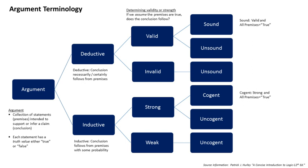Informal arguments, as studied in informal logic, are presented in ordinary language and are intended for everyday discourse. Conversely, formal arguments are studied in formal logic — historically called symbolic logic, more commonly referred to as mathematical logic today — and are expressed in a formal language. Informal logic may be said to emphasize the study of argumentation, whereas formal logic emphasizes implication and inference.